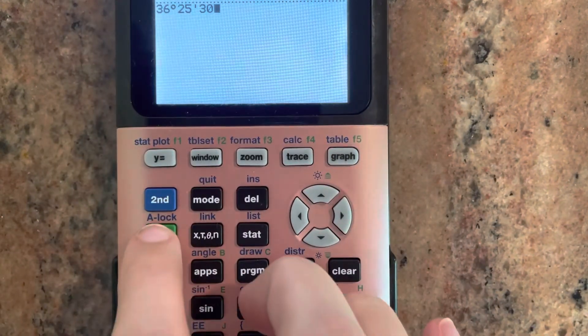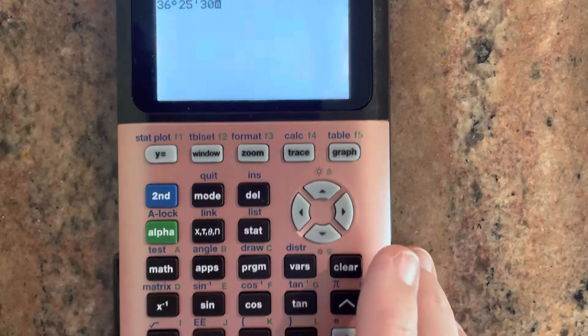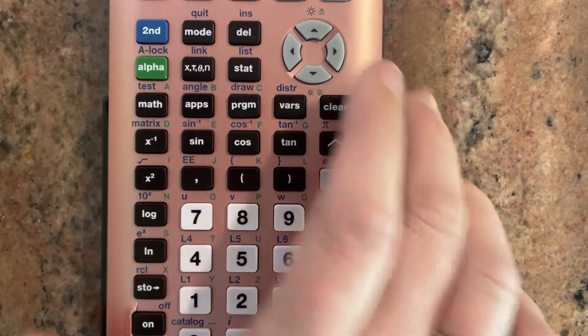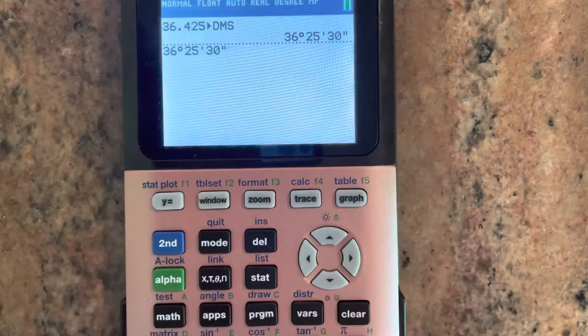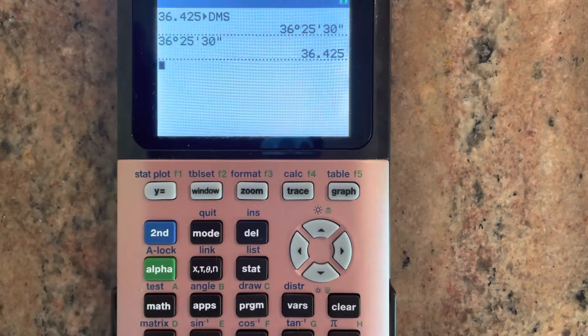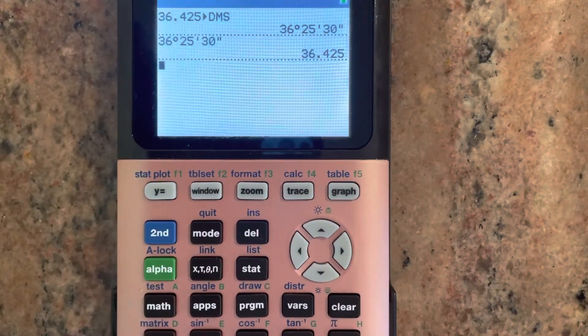So you would hit alpha to get the green menu, and then we hit plus, and that gets us the seconds symbol in there. And then you just hit enter and it turns it into a decimal for you.